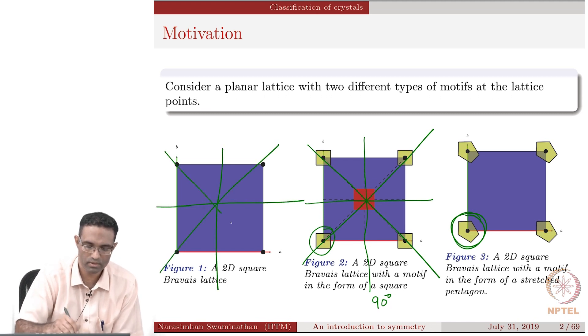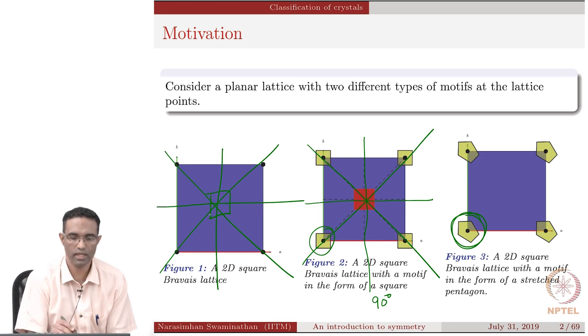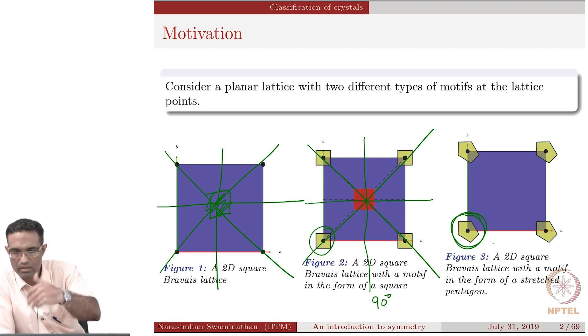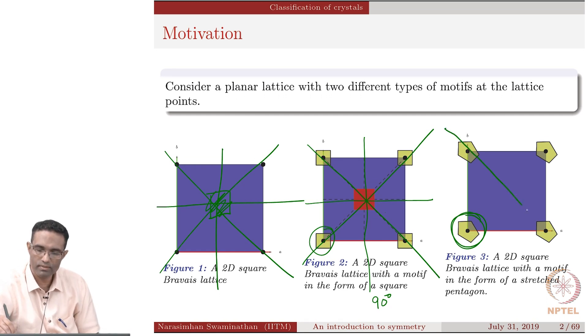It has all these symmetries, mirror planes, it also has a fourfold rotation, correct? But the second we put this pentagon here, we lost the fourfold rotations, but this still seems to be having some symmetry, right? There is some symmetry associated with it, there seems to be one mirror plane like that, that is it.